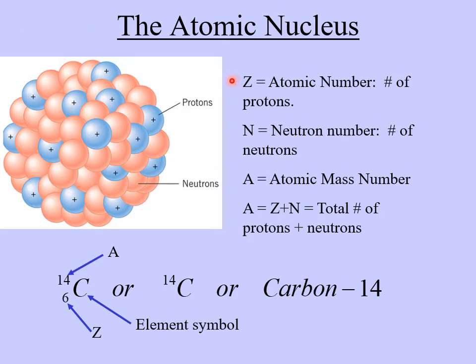The atomic nucleus consists of two particles: protons and neutrons. The number of protons is called Z, which stands for the atomic number. The number of neutrons is called the neutron number, N. There is also the atomic mass number A, which is just Z plus N — the total number of protons and neutrons, sometimes called nucleons, meaning a particle that's in the nucleus.